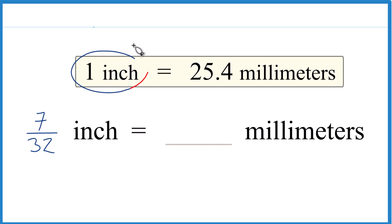Another way is just to recognize that one inch equals 25.4 millimeters. So all we really do is multiply 7/32 times that 25.4 millimeters.